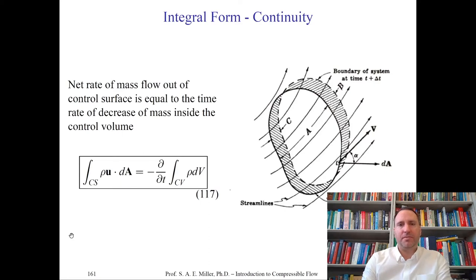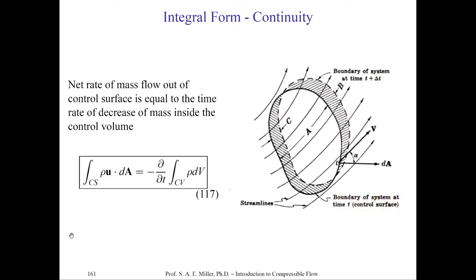The continuity equation is a fancy way of saying conservation of mass. In words: the net rate of mass flow out of a control surface equals the time rate of decrease of mass inside the control surface. The control volume shown may deform over time, with streamlines passing through the boundaries. We apply the continuity equation in integral form as equation 117.